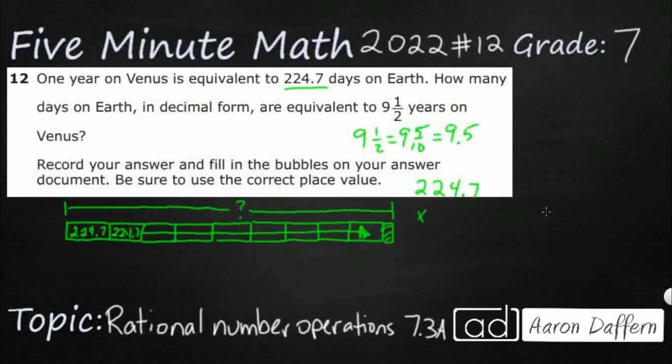So when we multiply, we're going to multiply by hand. We're going to ignore the decimals at this point. So just pretend it's 2247 times 95. That's all we need to know. We'll bring back the decimals at the end.